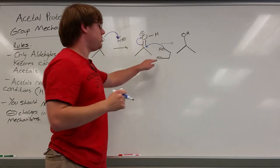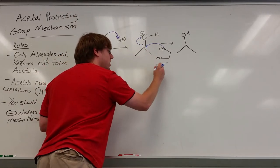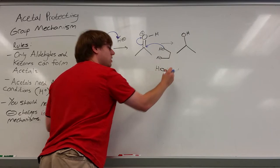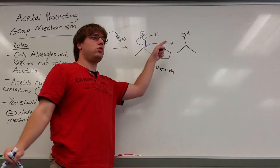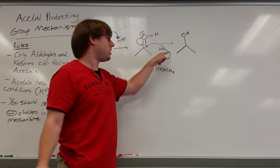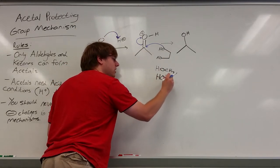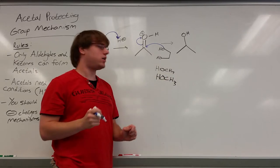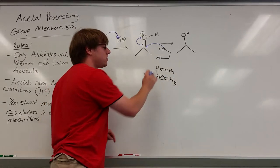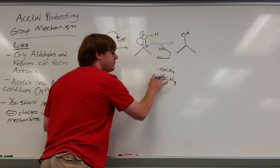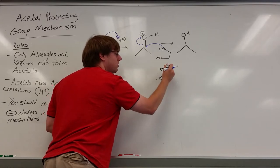The only difference between using a diol like this and H-O-C-H-3 like I used in the other video is that the two H-O-R groups that we're using are connected by the same carbon chain. We saw that at the end of the regular acetal mechanism, we ended up adding two separate O-C-H-3s. In this case, the O-C-H-3s are just connected to each other like this.